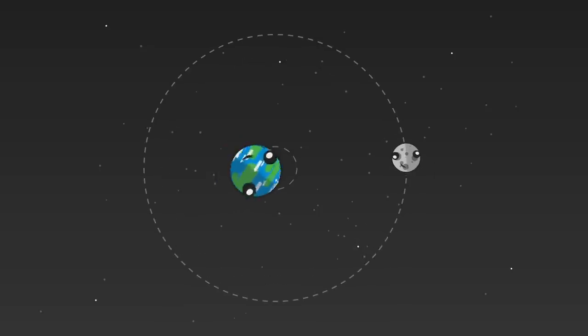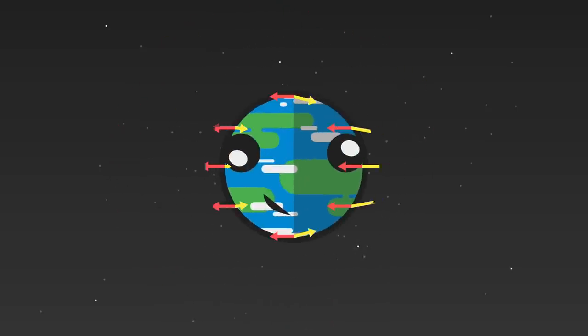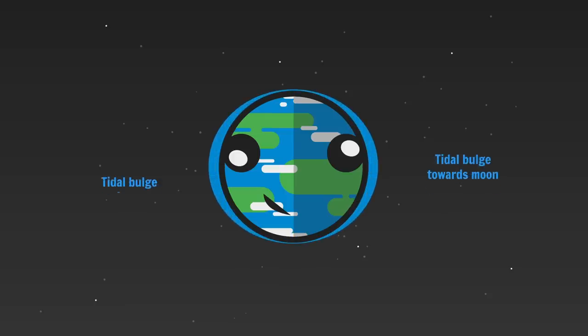And because the Earth-Moon system orbits around its barycenter, every point would be subject to centrifugal forces. Combine the two vectors and you get something like this. The oceans will deform along these vectors, and boom, two tidal bulges.